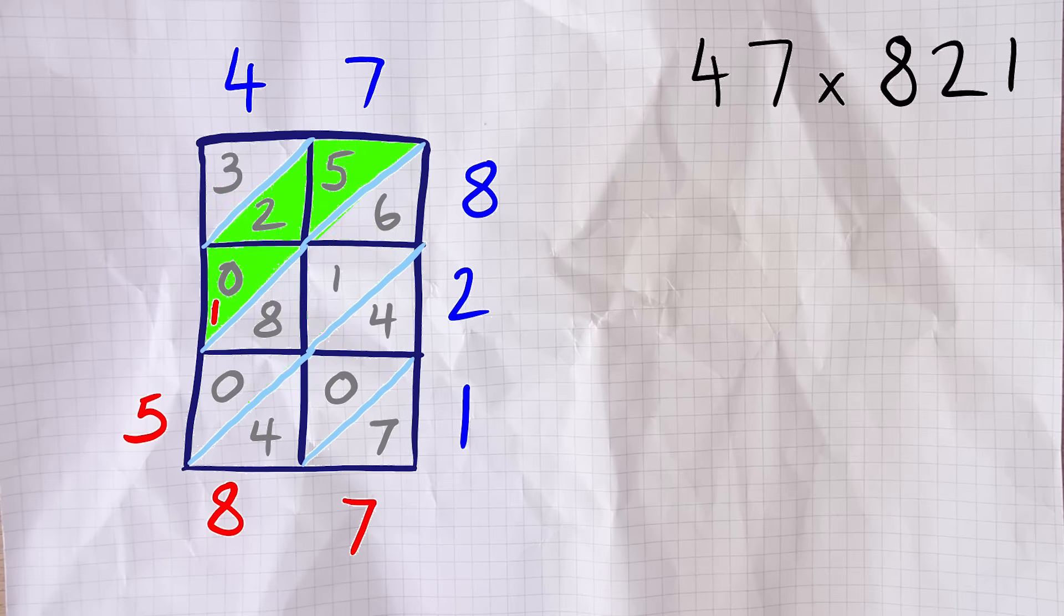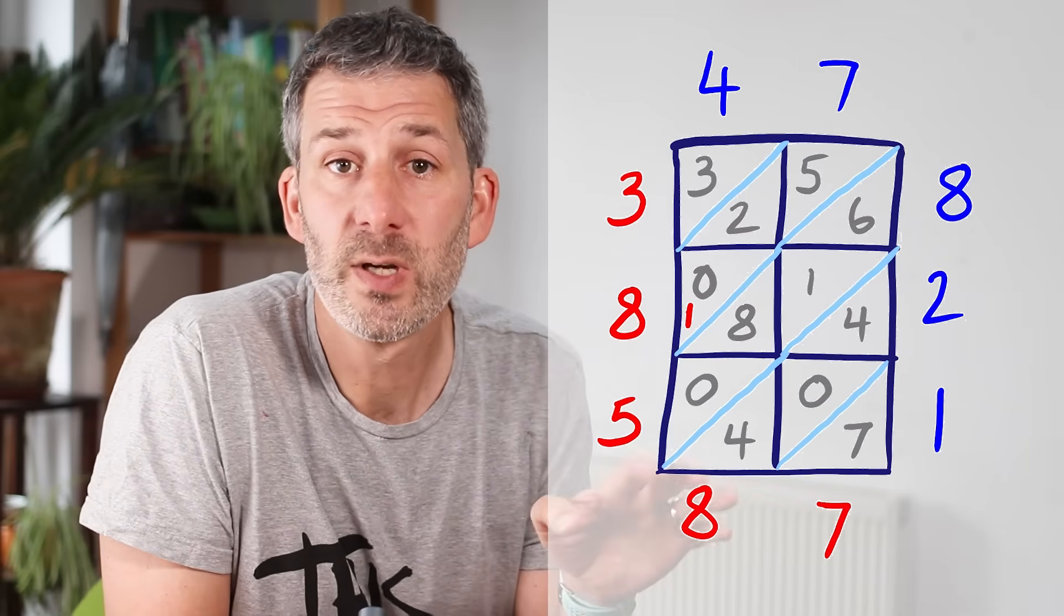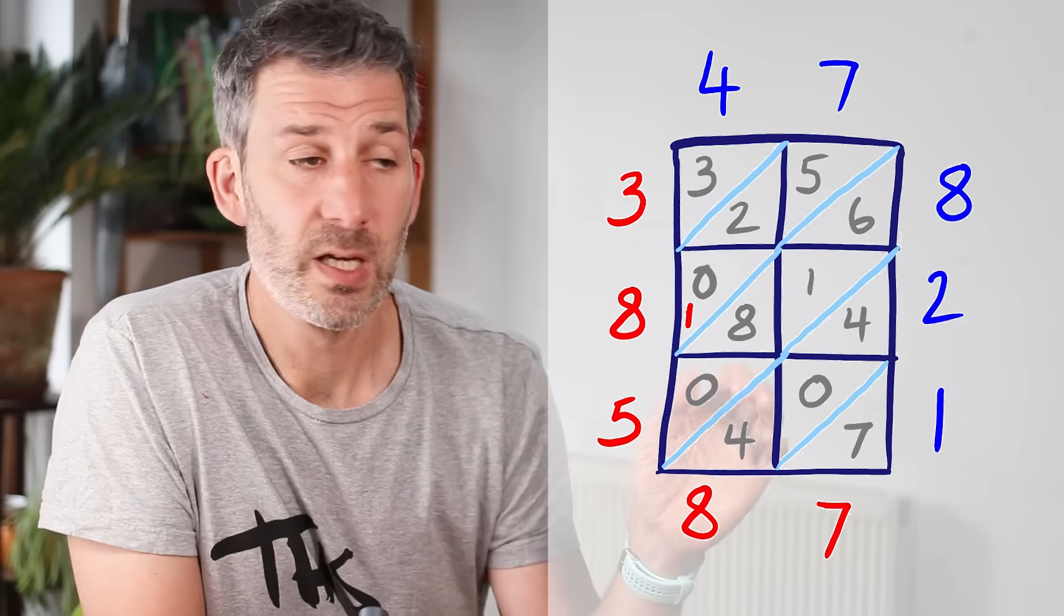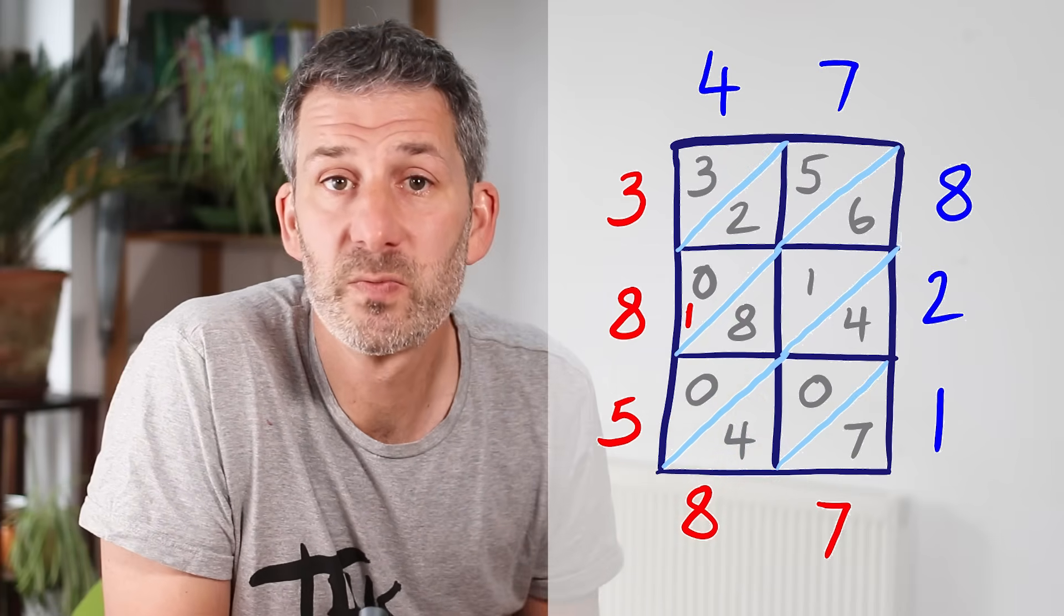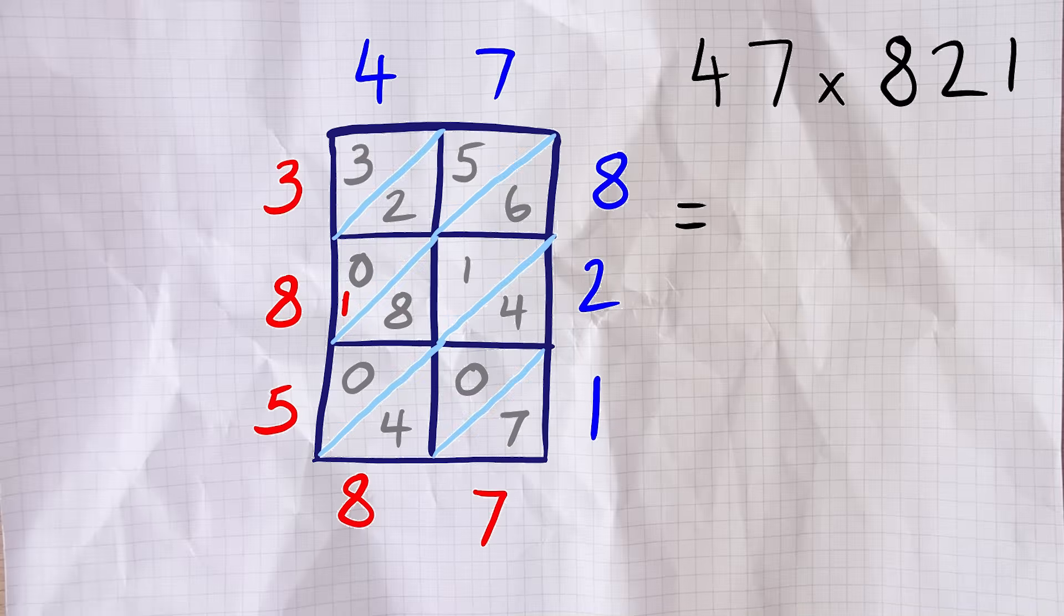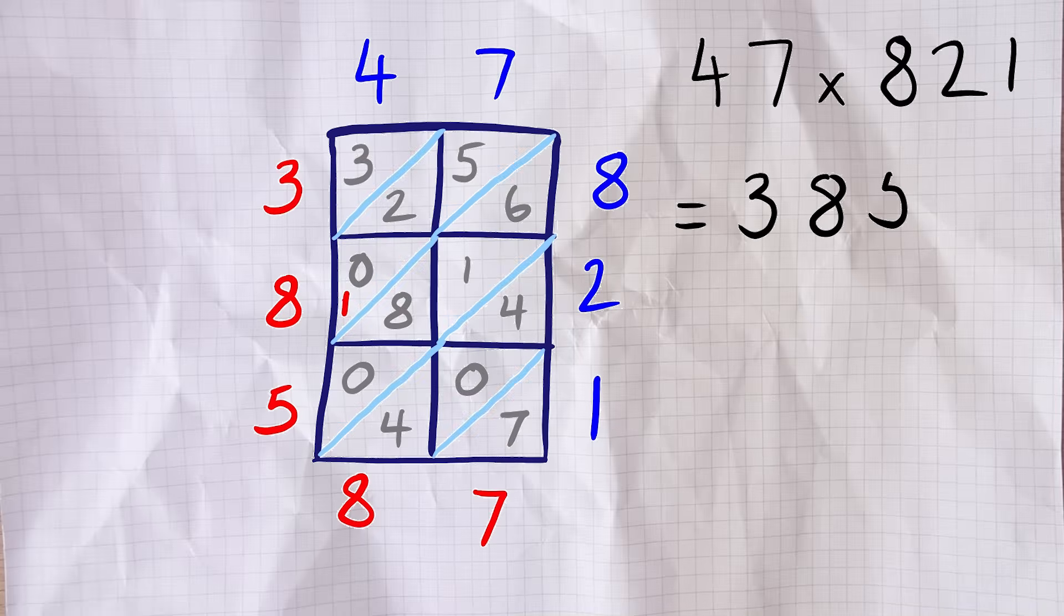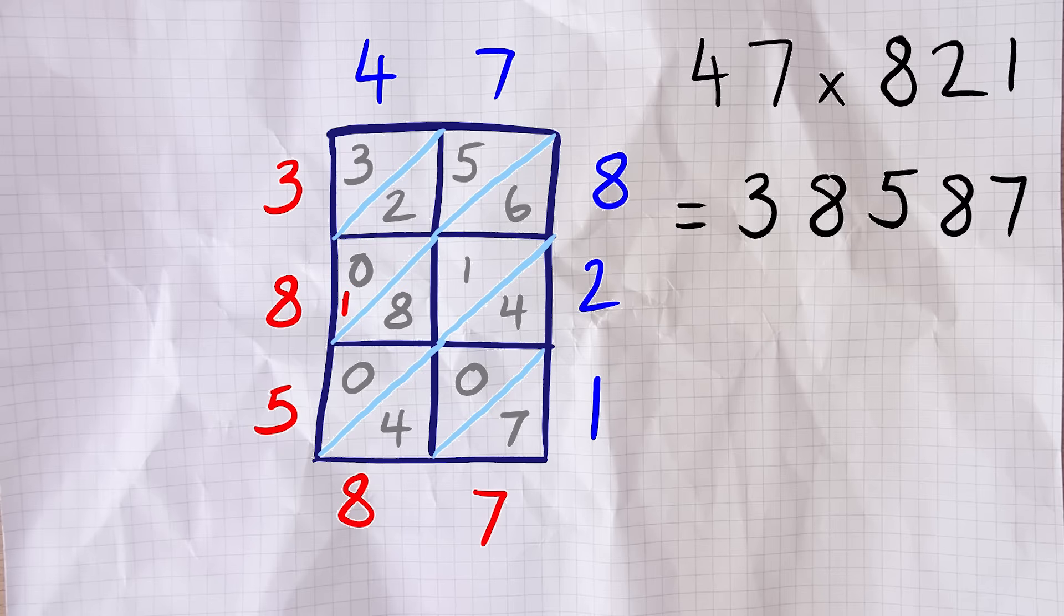Our next diagonal is 5, add 2, add 0 which is 7, but we must also remember to add on the one that we just carried, so we get 8 for that diagonal. Then the last diagonal is just 3. All we do is write the numbers down from outside the grid starting from the top left going around to the bottom right. 3, 8, 5, 8, 7. So 47 times 821 is 38,587.